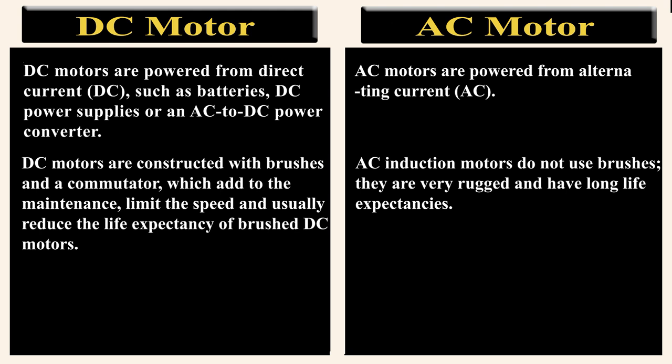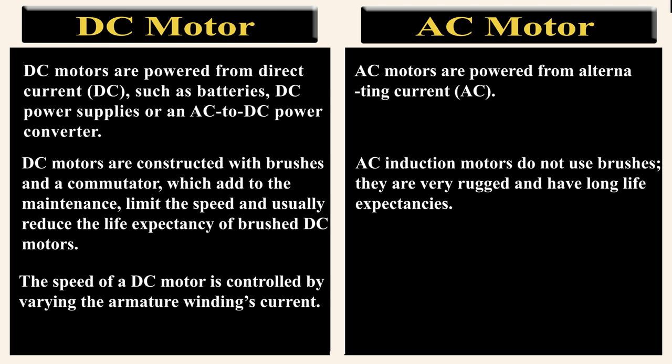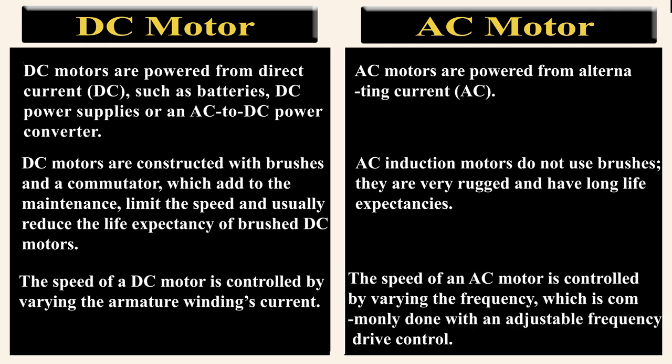The final basic difference is speed control. The speed of a DC motor is controlled by varying the armature winding current, while the speed of an AC motor is controlled by varying the frequency, which is commonly done with an adjustable frequency drive control.